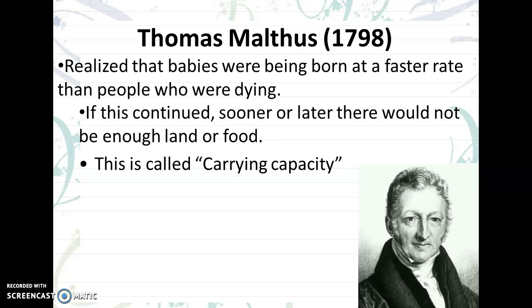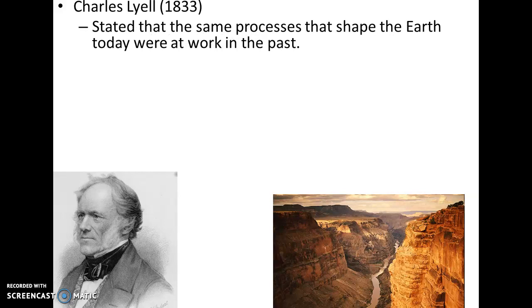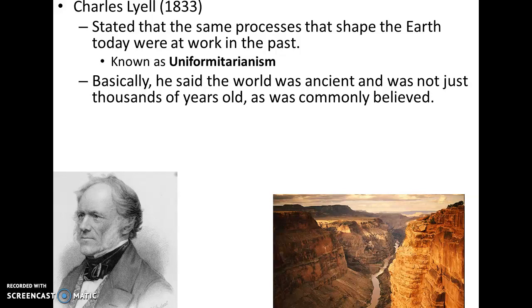Darwin started to take little pieces and parts of all of these ideas and eventually put them together into his own theory of evolution to explain how changes happen over time. The last scientist we're going to talk about today is Charles Lyell. He was another geologist, and he stated that the same processes that shape the Earth today were at work in the past. This is now known as uniformitarianism, which says these processes take a very, very long time.